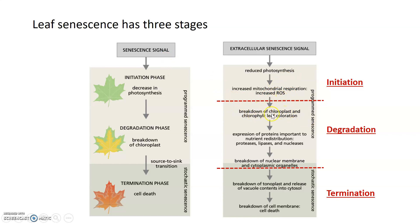That decrease in photosynthesis ultimately leads to the generation of ROS. At the beginning of degradation, ROS is involved in breaking down particular organelles — the chloroplasts and the chlorophyll within them. That's what leads to the discoloration of leaves during the degradation phase, because chlorophyll is the pigment that makes them green. As it gets broken down, other colors start to reveal themselves, no longer masked by the chlorophyll.